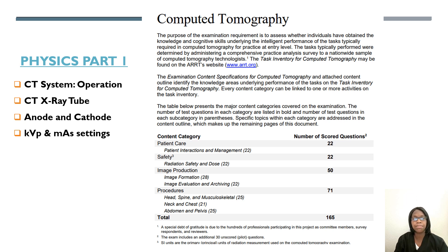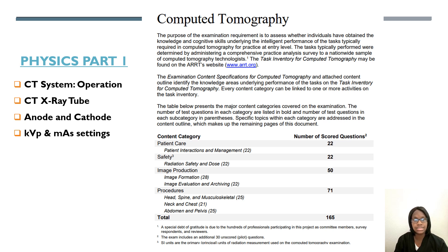For the physics part one, this is going to be under image production, which is another big part of the test. The physics portion will be about 50 questions. For this section we will talk about the CT system and how it operates, the CT x-ray tube anode and cathode, and then we'll talk about kVp and mAs settings.